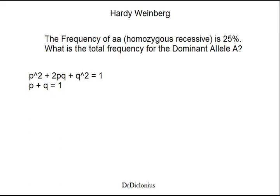Let's practice a Hardy-Weinberg calculation. The question says the frequency of aa, homozygous recessive, is 25%. What is the total frequency for the dominant allele A?